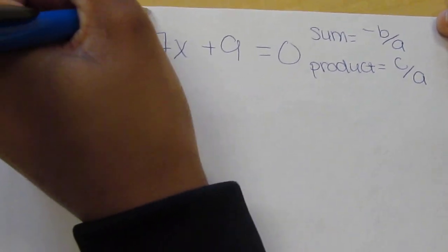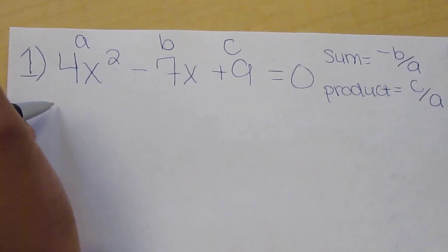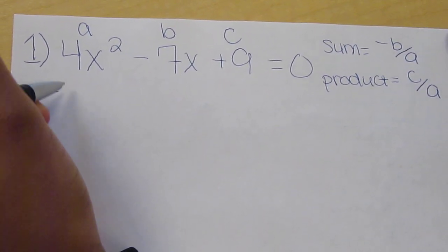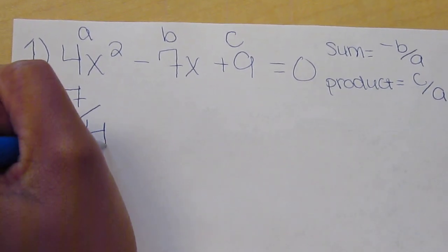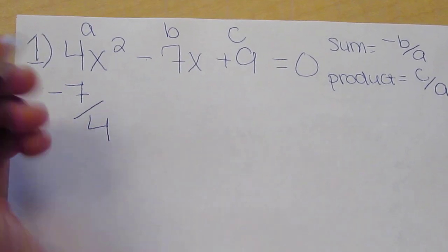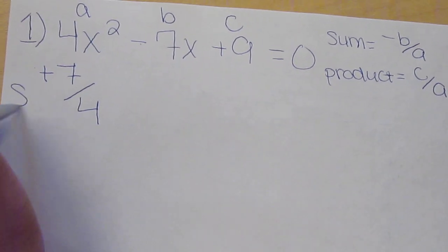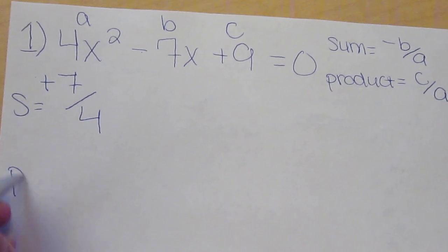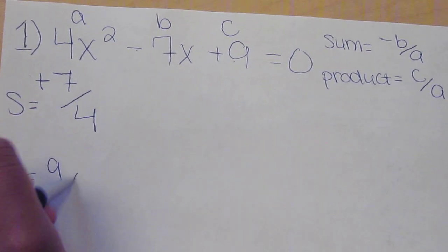This is A, this is B, and this is C. Negative B over A will be that. But it's a double negative, so that negative will turn into a positive. That equals the sum. The product C over A is C over A, so just 9 over 4.